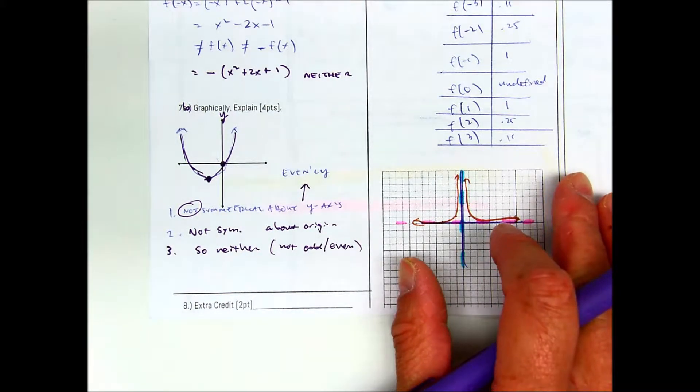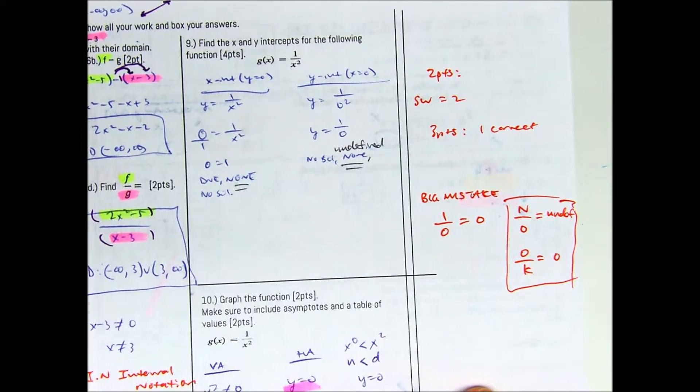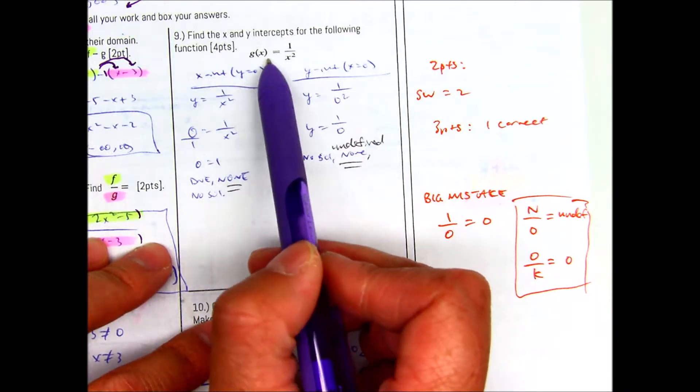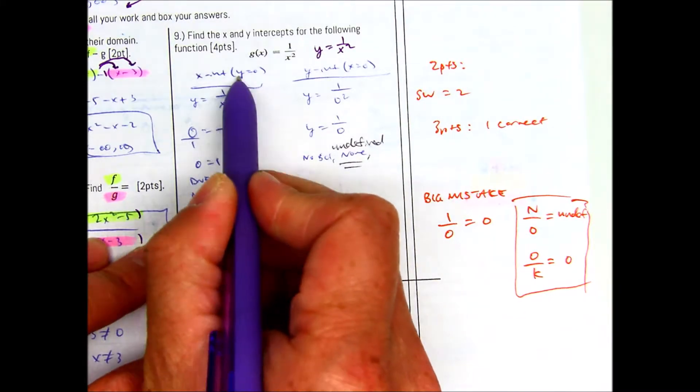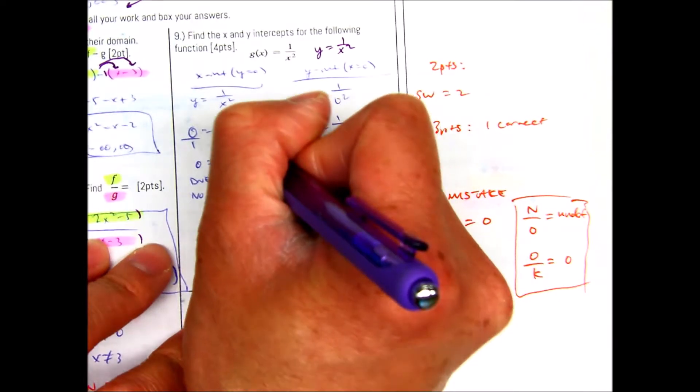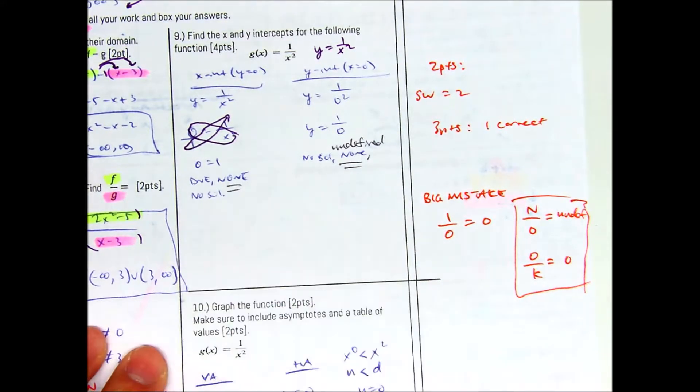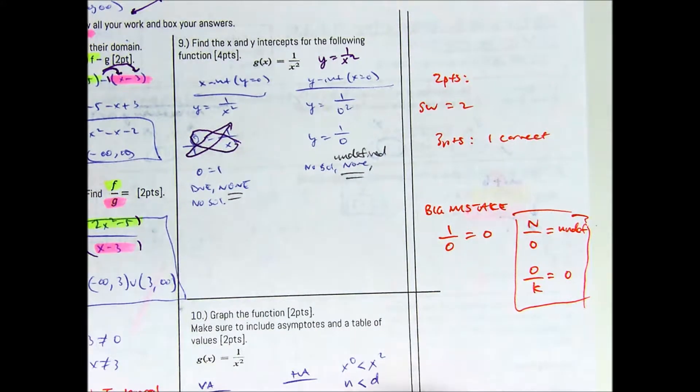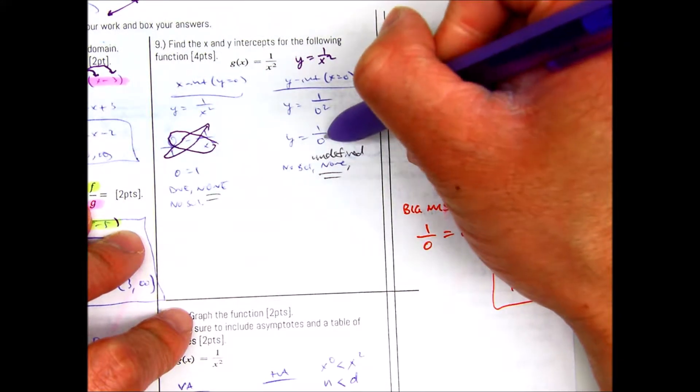Question number 9. Find the x and y intercepts of the following functions. So g(x) equals 1 over x squared. To find an x-intercept, you're going to make y equal to 0. The question is, where is y? It's right here. g(x) equals y. So you can write that as y equals 1 over x squared. You're going to make your y-value equal to 0. How do you solve for x? Well, you can make a fraction by putting in 0 over 1. And then you can just cross-multiply. That gives you 0 times x squared, which is 0, and then 1 times 1 is 1. Can 0 equal 1? No. That means that there is no x-intercept. It doesn't exist. Alright, let's look at y. Let's find the y-intercept. You make x equal to 0. If you put a 0 there, 0 squared, and 1 divided by 0 is undefined. So again, same thing. There is no y-intercept.